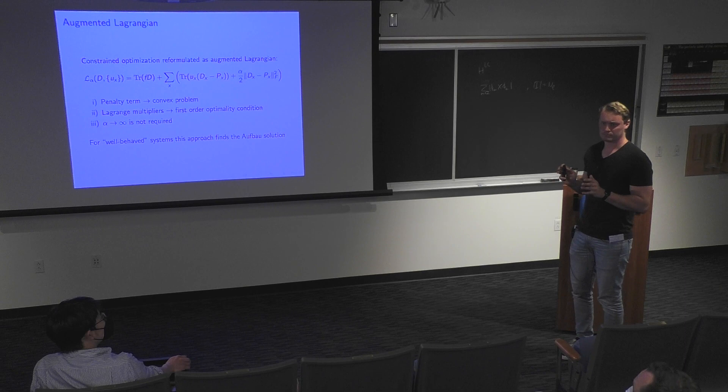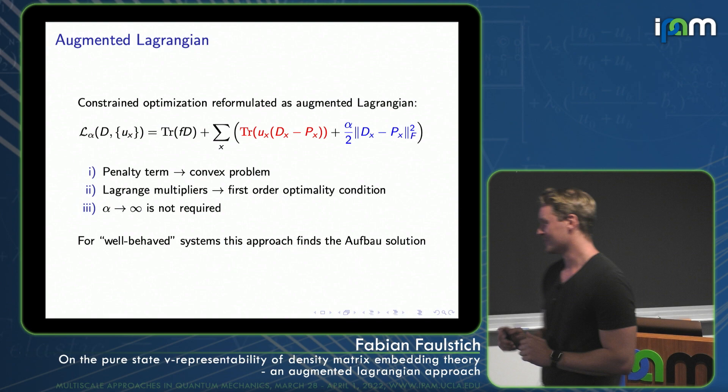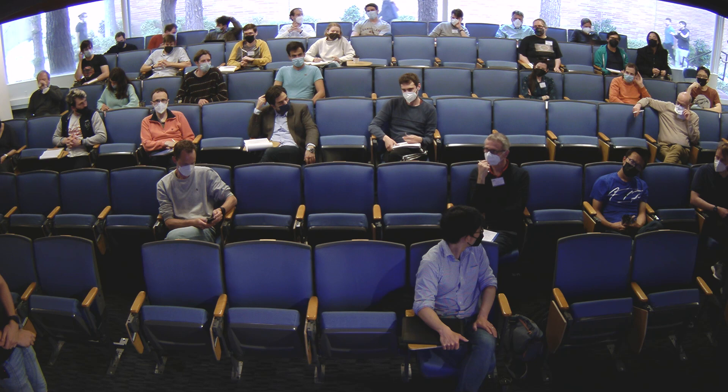Regarding alpha_max: for all numerical experiments that we did, alpha_max was equal to 10. For the systems we looked at, 10 was sufficient.